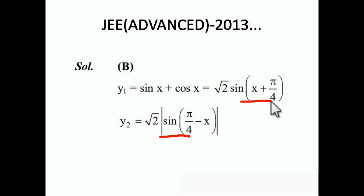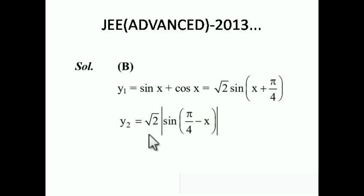Whenever a modulus appears, you have to find where the inner part of the modulus becomes zero. Inside the modulus we have sin(π/4 − x), which becomes zero when x = π/4. At that point we divide the limit. Our interval is 0 to π/2, and the modulus becomes zero at π/4, so the limits split into 0 to π/4 and π/4 to π/2.